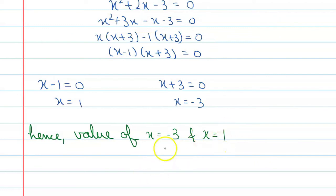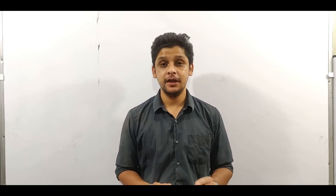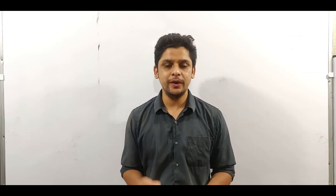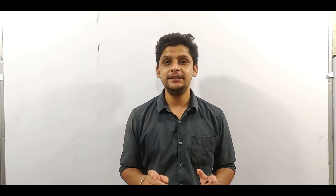Hence, value of x is equal to minus 3 and x equal to 1, and the correct option is A. I hope your doubt is clear with this video. If so, please like it and share it with your friends. If you still have a doubt, you may share your query through the comment section or you may contact me. Contact details are available in the description box.